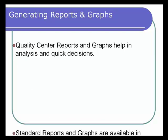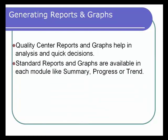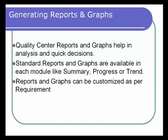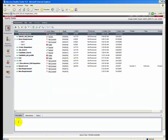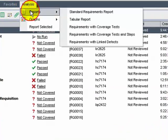Quality Center reports and graphs help in analysis and quick decisions. Standard reports and graphs are available in each module, like summary, progress, or trend reports. Reports and graphs can be customized as per requirements. Let's generate a standard requirements report and customize it for a specific user name and add it to the favorites folder. In the Requirements module, click Analysis > Reports > Standard Requirements Report.